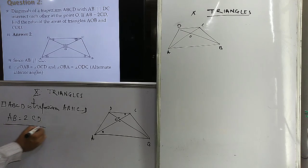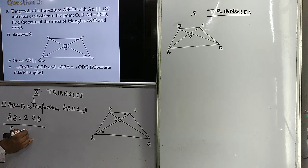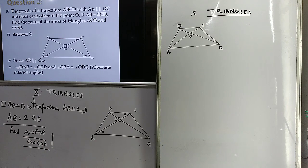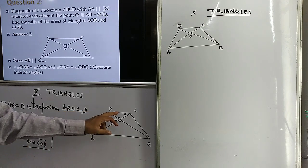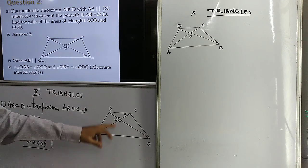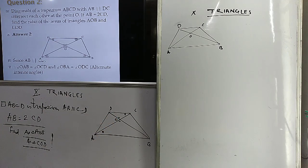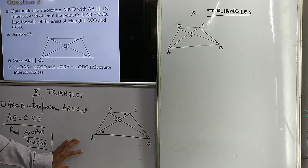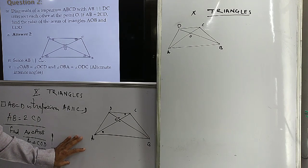And what do we have to find? We have to find the ratio of area of triangle AOB divided by area of triangle COD. This ratio we have to find. Now, you know that ratio of area of two similar triangles equals ratio of square of their corresponding sides. But first of all, these two triangles must be similar. So I am first proving that triangle AOB is similar to triangle COD.